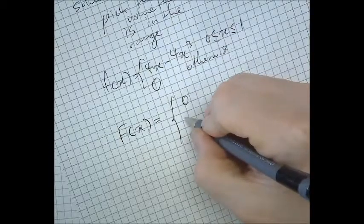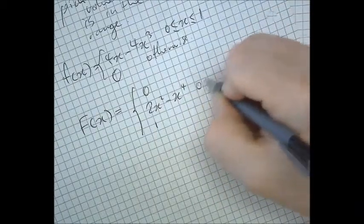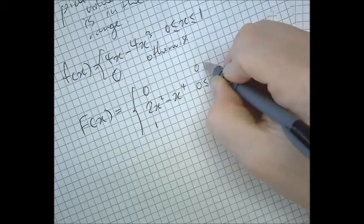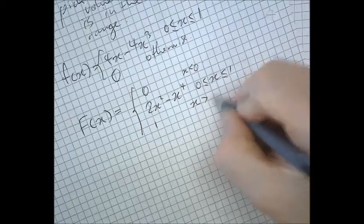Integrate that, you get 2x squared minus x to the power of 4. That only applies between 0 and 1. If x is less than 0, the value is 0. If x is greater than 1, the value is 1.